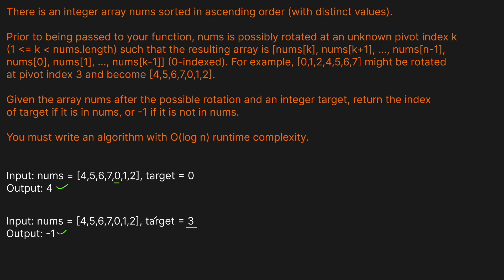Given the constraint of O(log n) runtime complexity, we know we need to use binary search. The array was initially sorted in ascending order, and even with the pivot, everything to the left of the pivot point is sorted and everything to the right of the pivot point is sorted. For example, from four to seven is sorted, and then zero to the end is sorted.